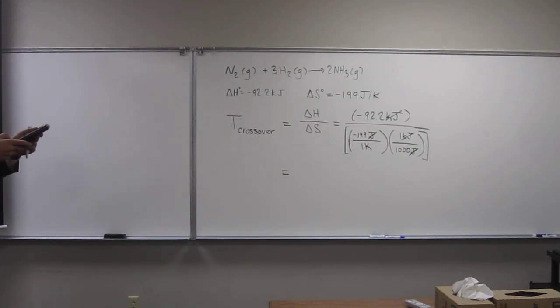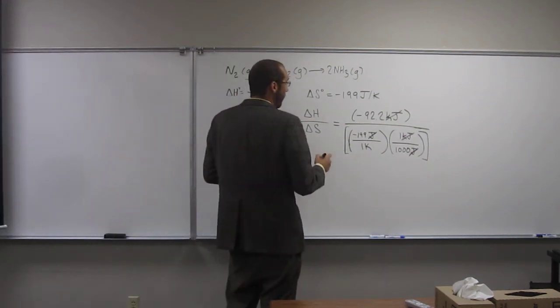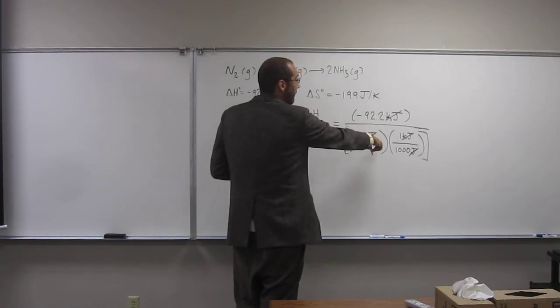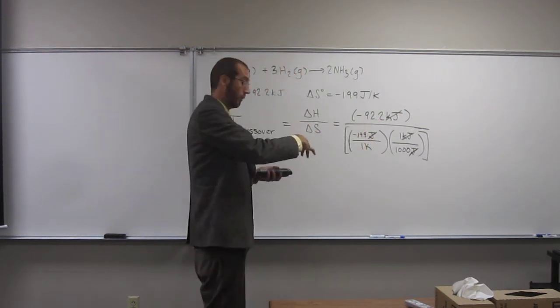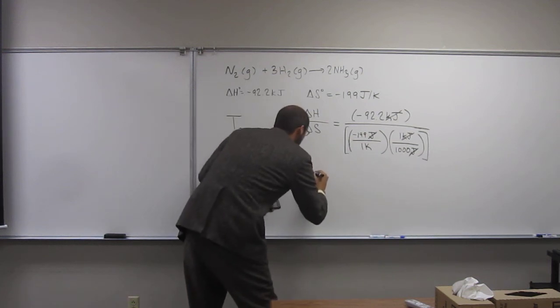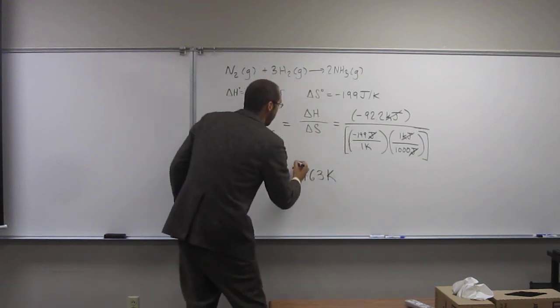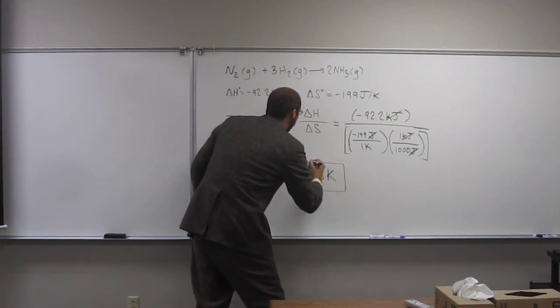So I do like to do the bottom first. So 199 divided by 1,000. And then say 92.2 divided by that answer. And 3 sig figs, 3 sig figs. So our answer's to 3 sig figs. So I got 463 kelvin.